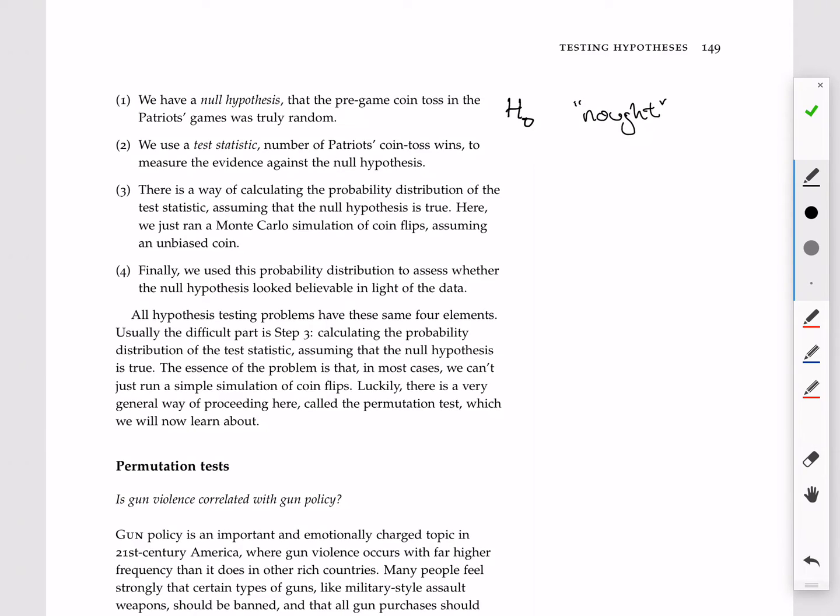And what that null hypothesis is in this context is that the pregame coin toss in each of those Patriots 25 games was truly random. 50% chance of winning, 50% chance of losing. That's step one.